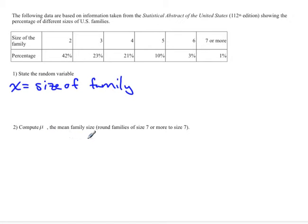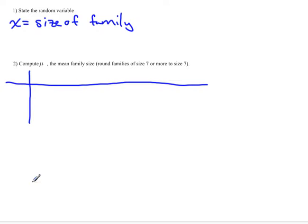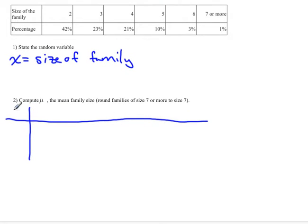Now we'd like to compute μ, the mean family size. I find this easier to do in a table. I personally like vertical tables, so I'll make mine into a vertical table, but you can do either way. The first thing we need to do is list out our x values: 2, 3, 4, 5, 6, and 7. That category is 7 or more, but usually we just round it off to 7, realizing there's probably not too many families bigger than that.